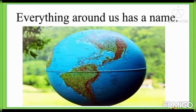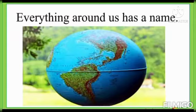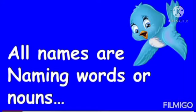Children, do you know everything around us has a name? It means, whether they are people, places, animals or things, they all have their different names. All names are naming words or nouns.